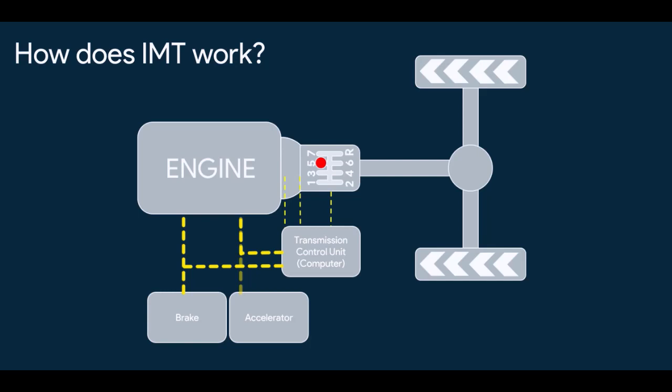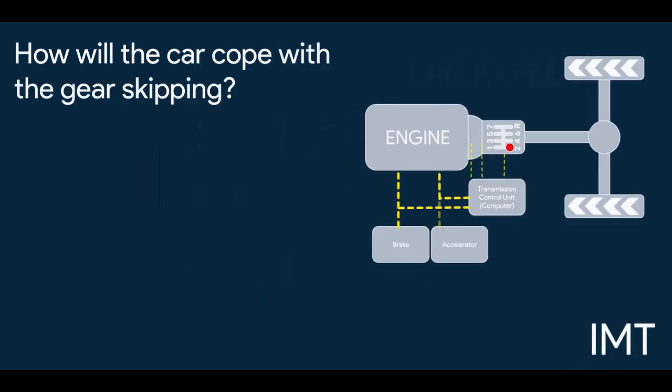So how does IMT work? And what if the driver skips too many gears? Like he shifts from 5th gear to 2nd directly? How will the car cope up with it? Let's find out.